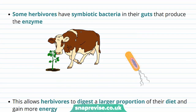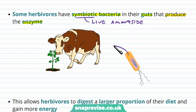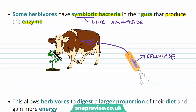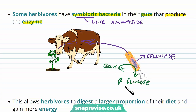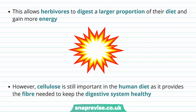Some herbivores eat plants all the time, so they must have a way to digest cellulose. They have symbiotic bacteria in their guts which do produce cellulase. Symbiotic bacteria means they live together and benefit each other — the bacteria benefit from the environment of the herbivore's stomach, and the cow benefits because the bacteria produce cellulase. When the cow eats plants and those cell walls enter the gut, they can be broken down into beta-glucose, which the cow can then use as an energy source through respiration.